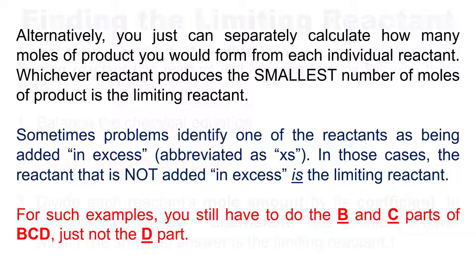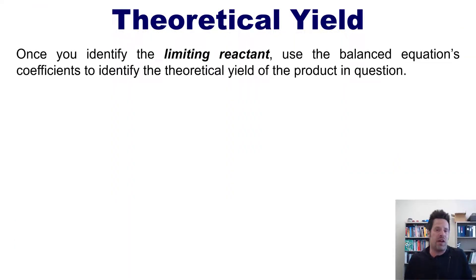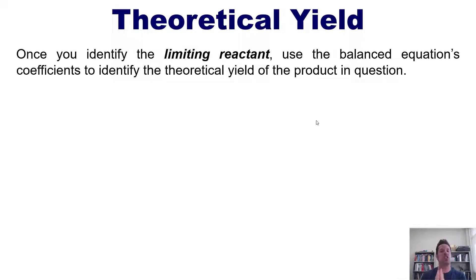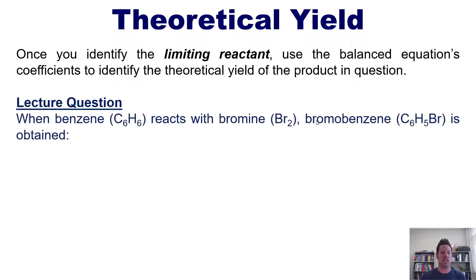So how in the world does all of this information help us to calculate theoretical yield? Well, once you identify your limiting reactant, you then just use the balanced equation's coefficients to identify the theoretical yield of the product in question. Let's see if we can tackle this by taking a look at a lecture question.